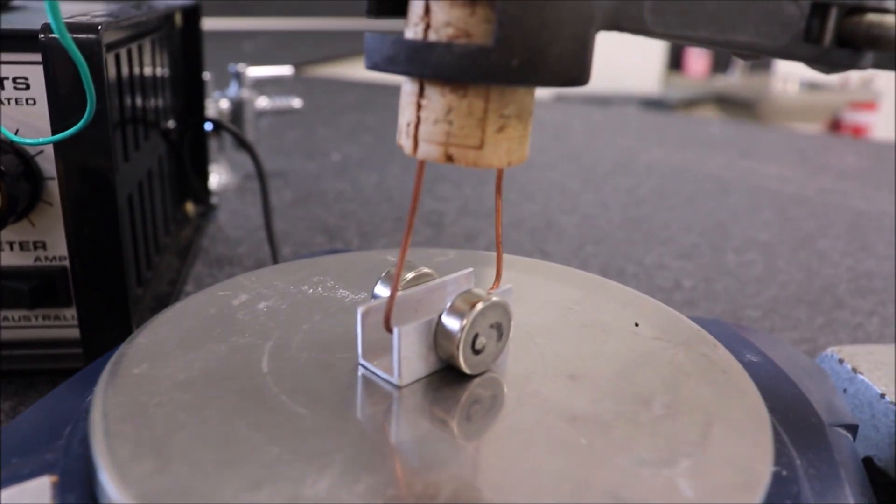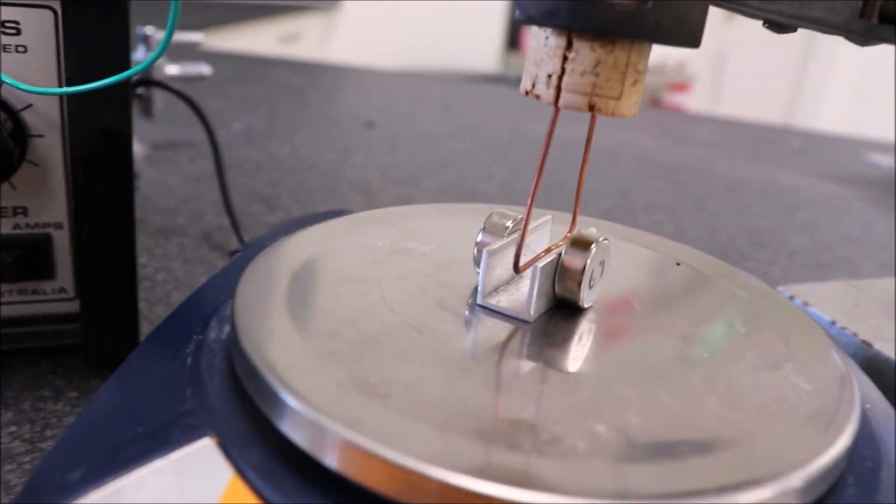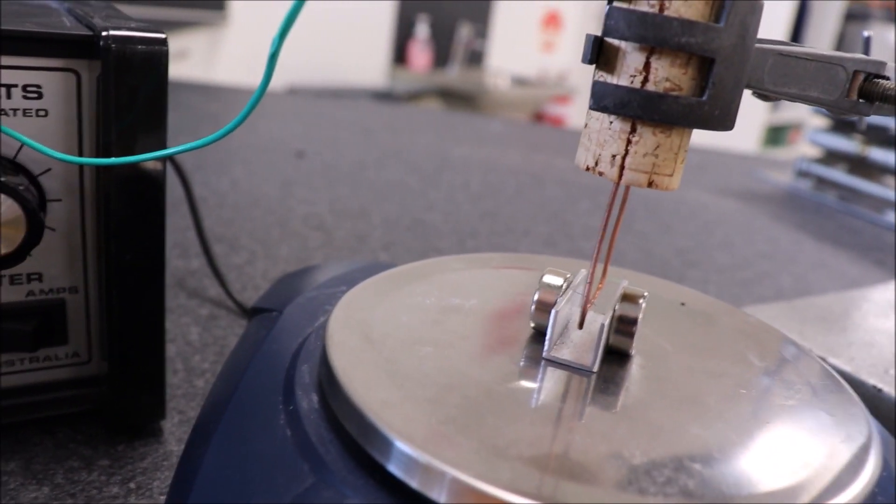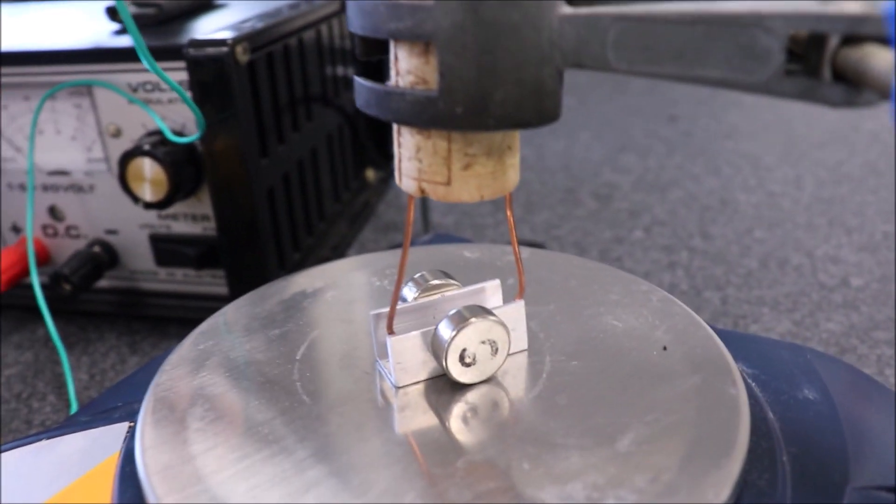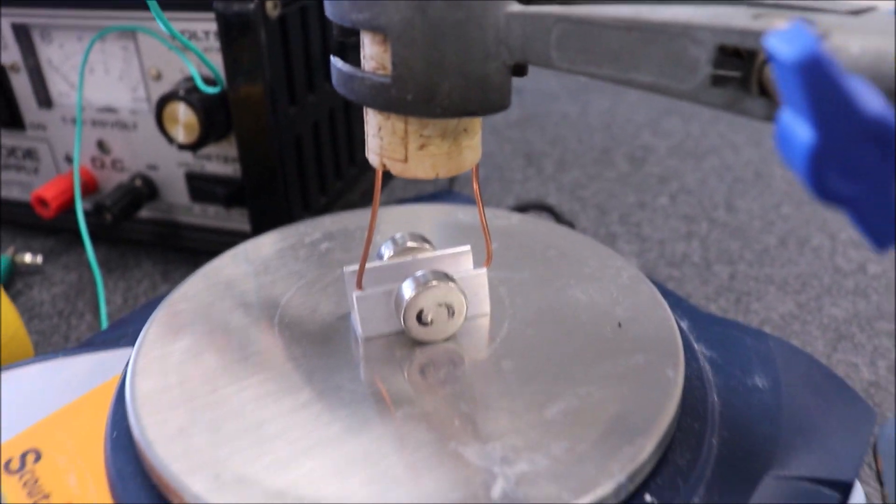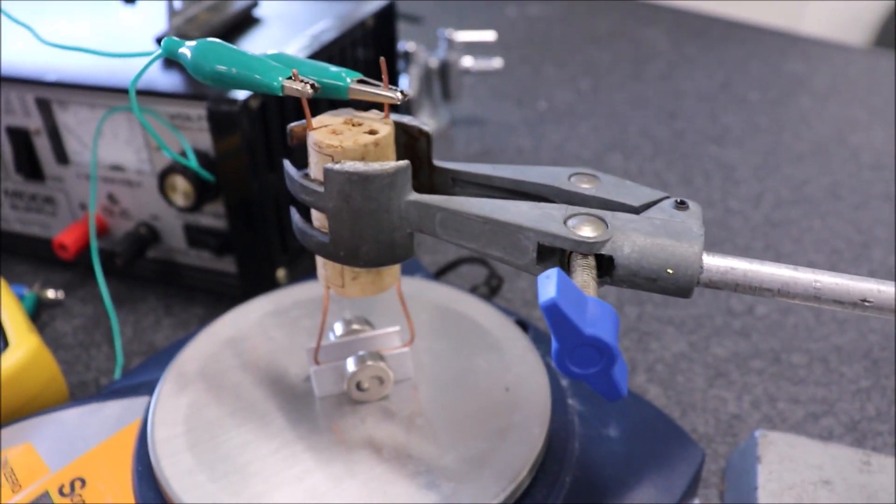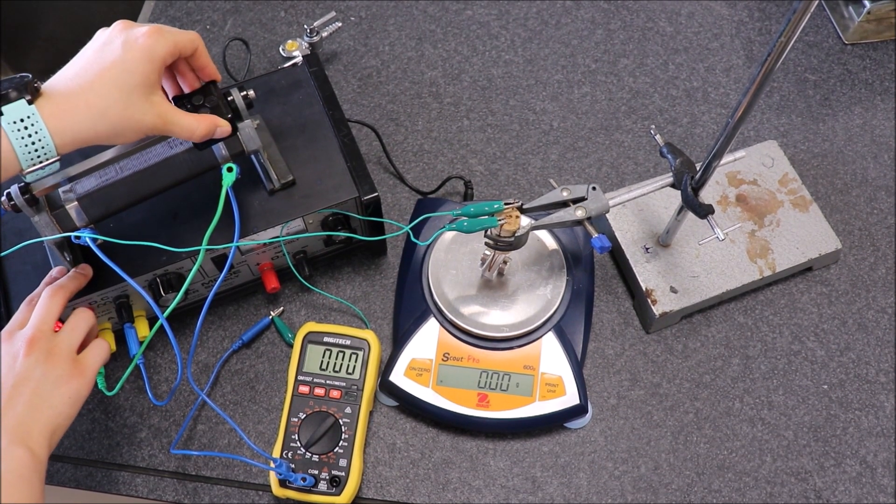You can see the copper wire is held in a cork in a retort stand and clamp, and the wire doesn't touch the magnets but is just freely suspended in the air. The magnets produce a field at right angles to it.